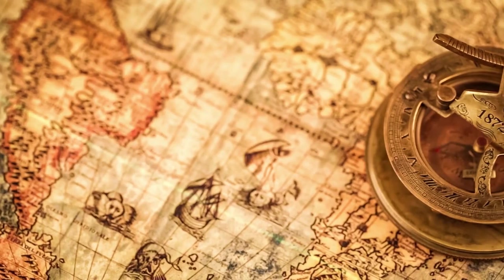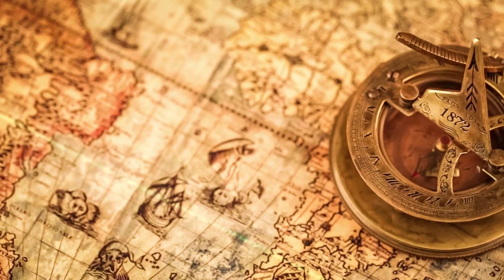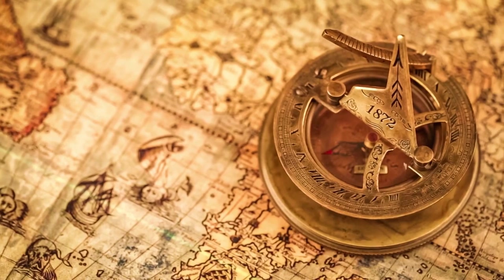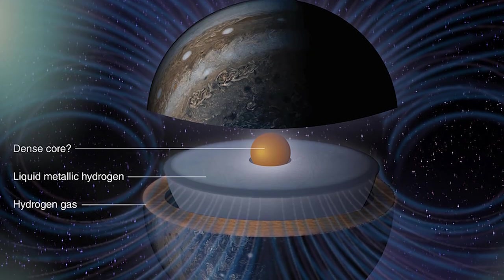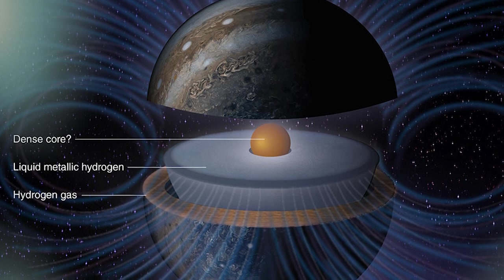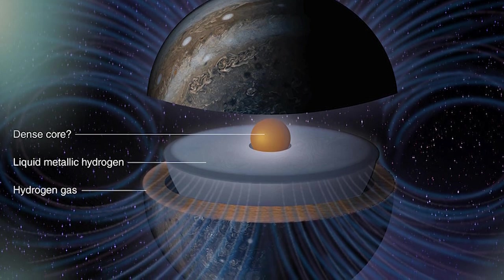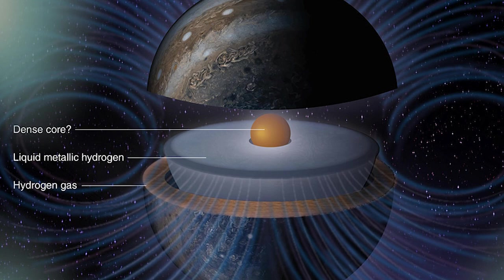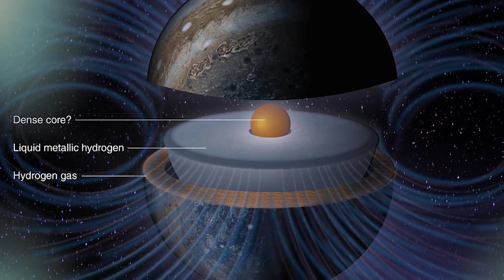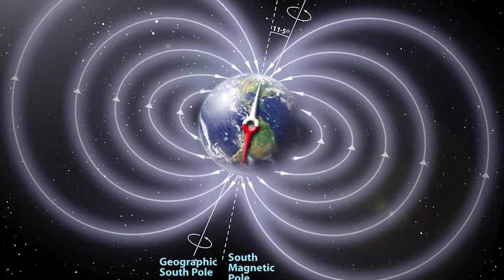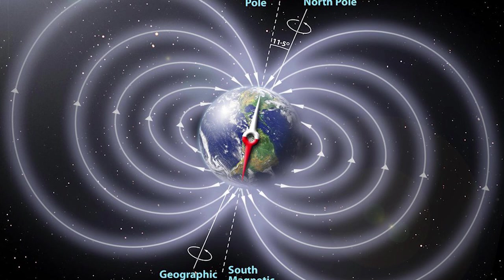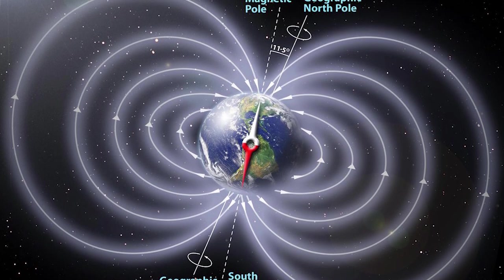But beyond helping travellers all over history find their way with a compass, Earth's magnetosphere serves a far more important job: protecting the surface from high energy particles like cosmic rays and the solar wind, by trapping and accelerating these particles to the poles. There, they collide with gases in the upper atmosphere, creating beautiful auroras. Without this protection, the sheer strength of these high energy particles would strip material from all over our atmosphere, essentially blowing it away into space.